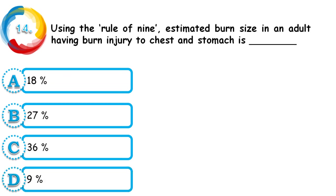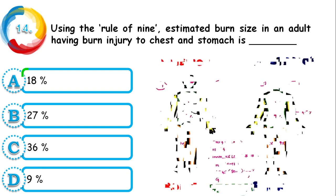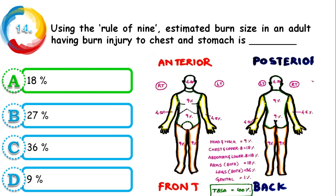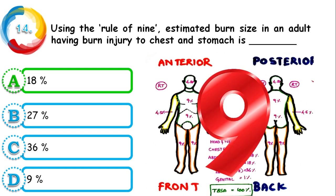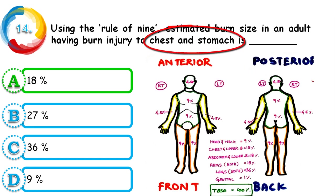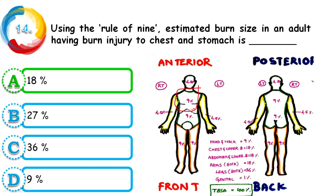Question 14: Using the rule of nines, estimate the burn size in an adult having burns to the chest and stomach — 18%, 27%, 36%, or 9%? The correct answer is 18%. On the image you can see the anterior and posterior views of the adult, with each body part considered as 9%. The chest (anterior) = 9% and the stomach = 9%, totaling 18%. You can calculate other area combinations similarly.